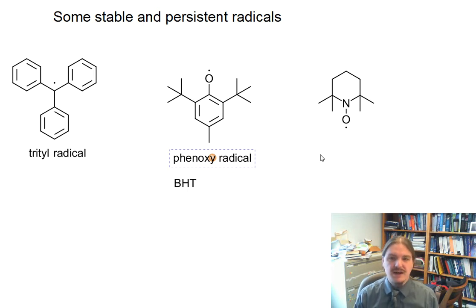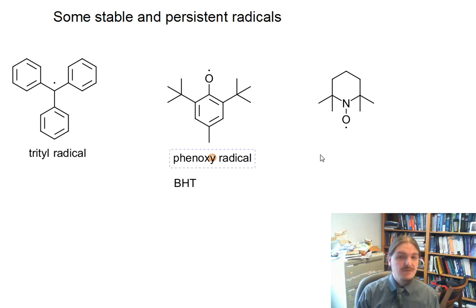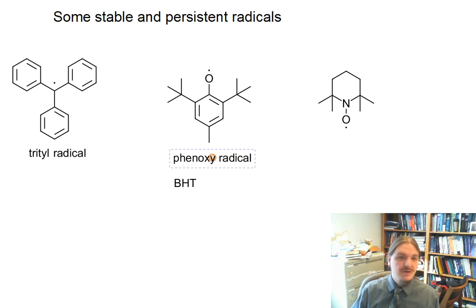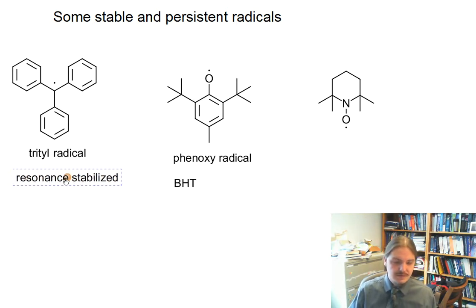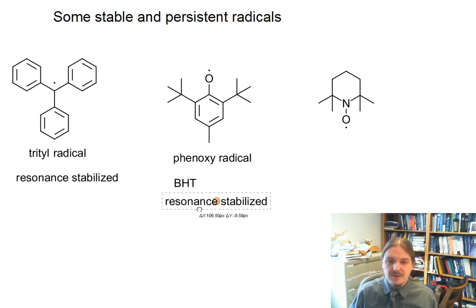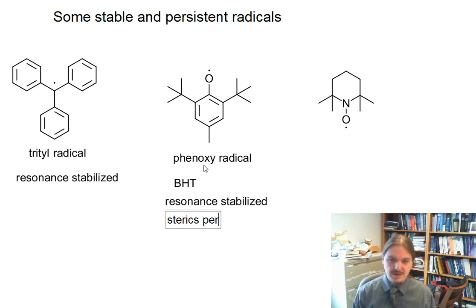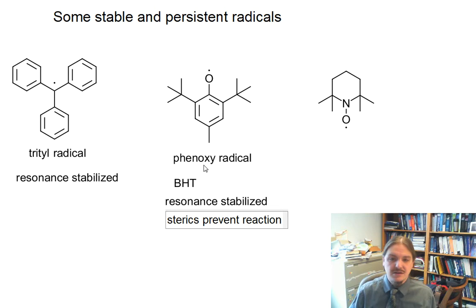Antioxidants work by either destroying reactive radical species or by reacting with oxidizing agents in a way that prevents reactive radical species from forming. The BHT radical is stabilized by resonance and also by sterics — the tert-butyl groups here prevent additional reaction of that radical with other things.